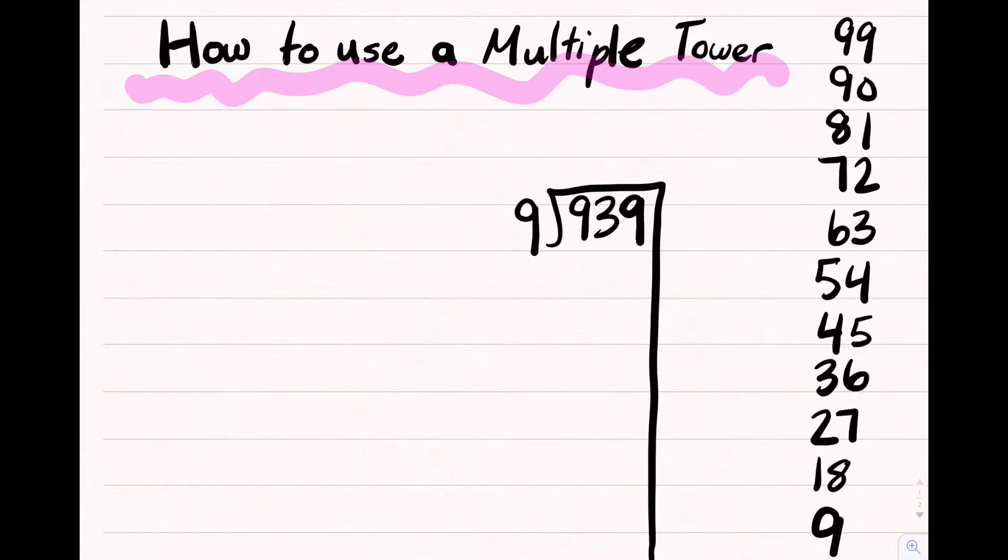You see a 93 in the number that is really 930. And you see the closest number to 93, which is 90. Do 9 times 100, which equals 900. Then 939 minus 900, which equals 39.